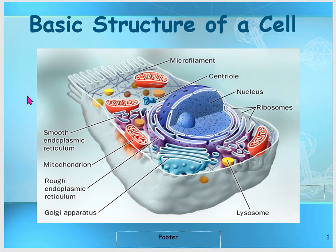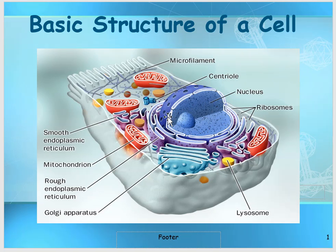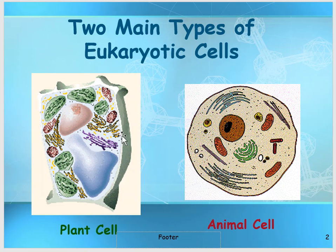What you see here is a basic computer-generated model of a cell, which shows pretty much an electron microscopic image. This is a eukaryotic cell because it has a very clear nucleus, shown here in blue, which is the main controlling center located around the middle of the cell. There are two types of eukaryotic cells: plant cells and animal cells.